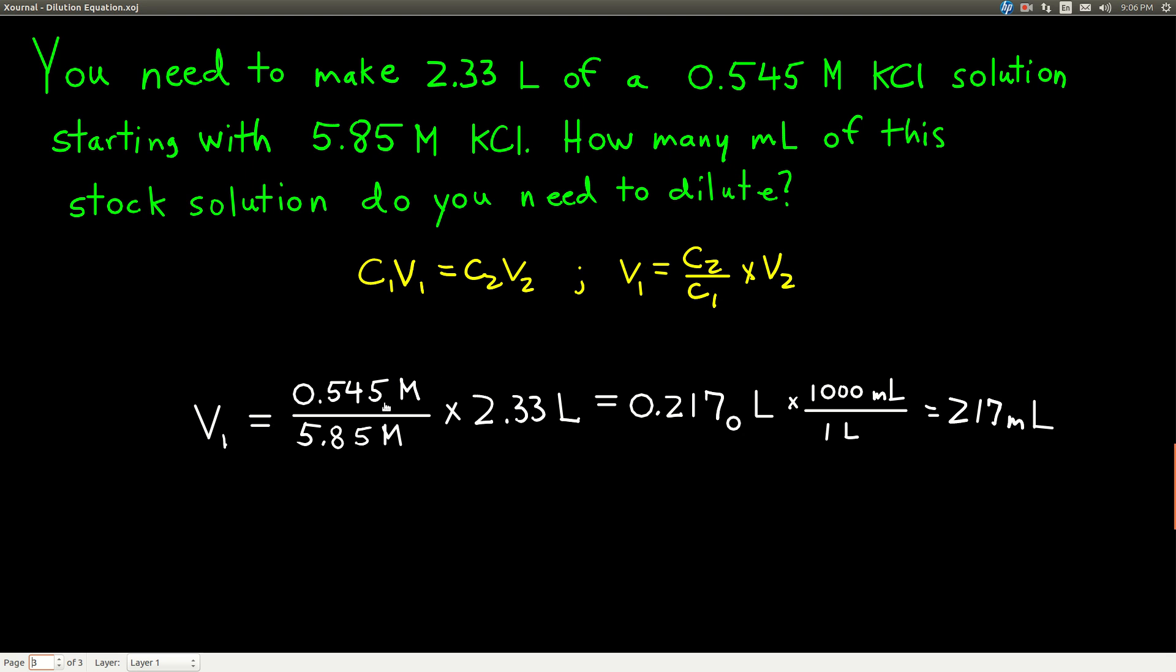So, what we do is we plug in, there's C2, there's C1, there's V2, and we get V1 in liters, 0.217 liters, and all we do is multiply by 1,000 or move the decimal 3 to the right to get our answer, 217 milliliters.